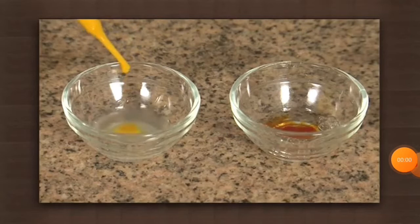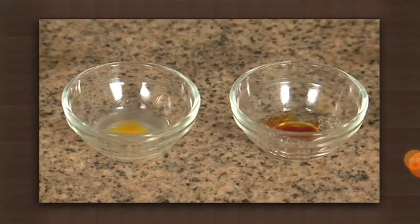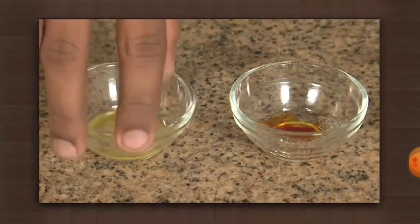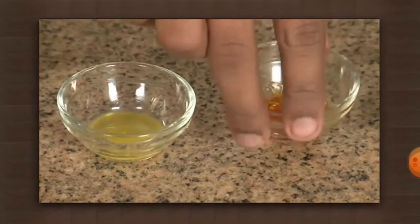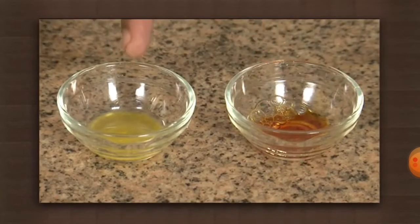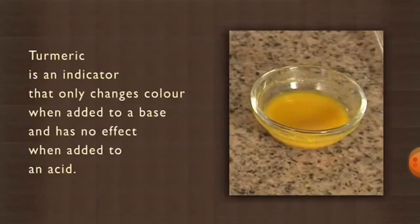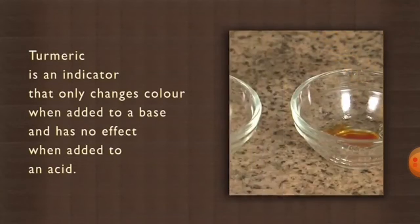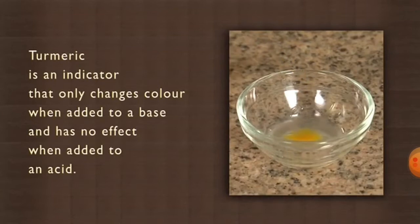Students, you have to observe the effect of turmeric on given solutions. The first sample is lemon juice and the second is a baking soda solution. You can observe the color changed only in the baking soda solution, not in the lemon juice. Turmeric is an indicator that only changes color when added to a base, and has no effect when added to an acid.